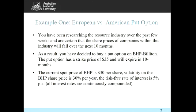The question says: you have been researching the resource industry over the past few weeks, and you are certain that the share price of companies within this industry will fall over the next 10 months. As a result, you have decided to buy a put option on BHP Billiton. The put option has a strike price of $35 and will expire in 10 months. The current share price of BHP is $30 per share, volatility is 30% per annum, and the risk-free rate of interest is 5%, with interest rates continuously compounded.